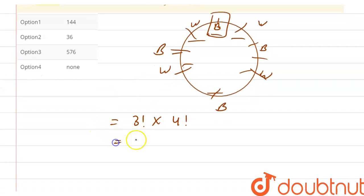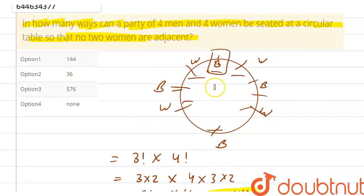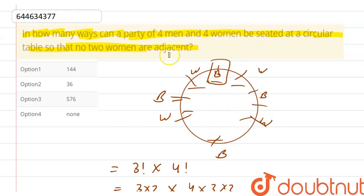So this is the number of ways in which we can arrange it. It will be 3 times 2 times 4 times 3 times 2. That will be 6 times 6, 36 times 4. That will be equal to 144. So the total number of ways of arranging four men and four women when no two women are adjacent together is 144. So option one is the correct option.